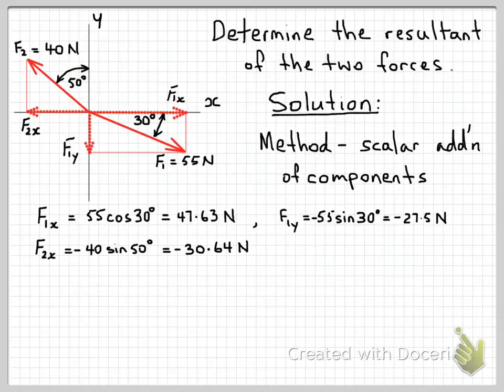So in this case the x component will be F2, which is 40 Newtons, times sin of this angle here. So we have in the minus x direction, 40 sin 50, which is minus 30.64 Newtons.